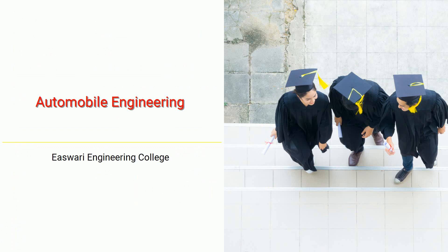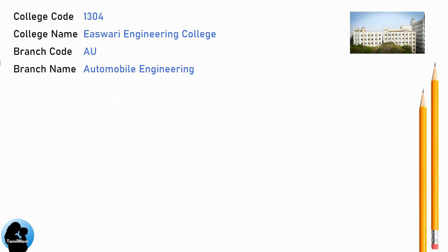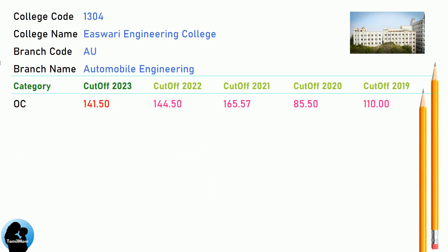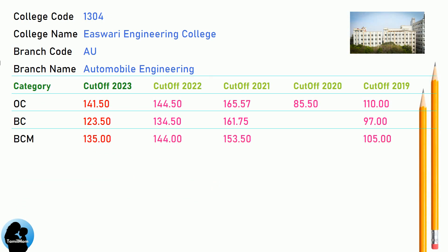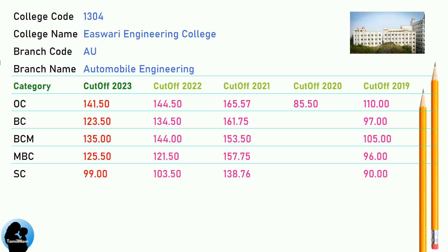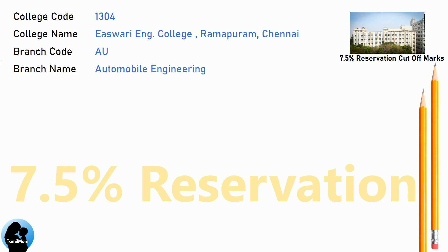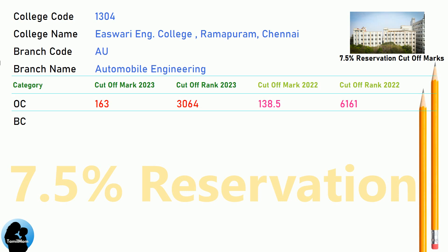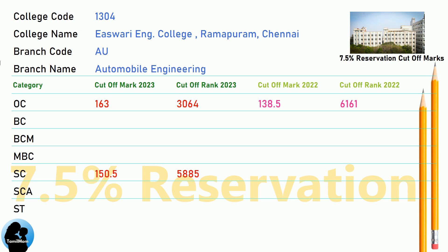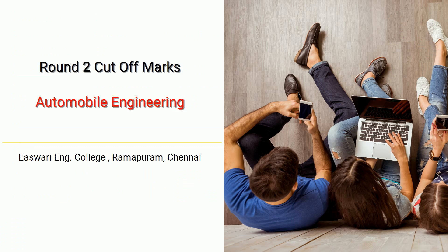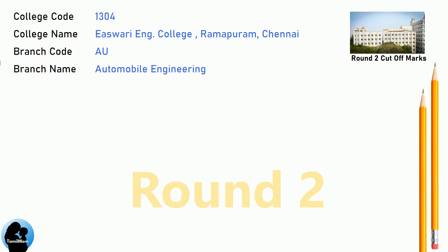DNA Cut-Off for Eshwari Engineering College in Automobile Engineering. DNA 7.5 Reservation Cut-Off for Eshwari Engineering College in Automobile Engineering. BNA Round 2 Cut-Off for Eshwari Engineering College in Automobile Engineering.